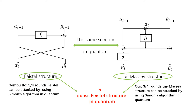According to our results, three-round and four-round Lai-Massey structures can be attacked by using Simon's algorithm in the quantum setting. This is the same as the Feistel structure. So the next question is: can the attacks be extended to quasi-Feistel structures in the quantum setting?